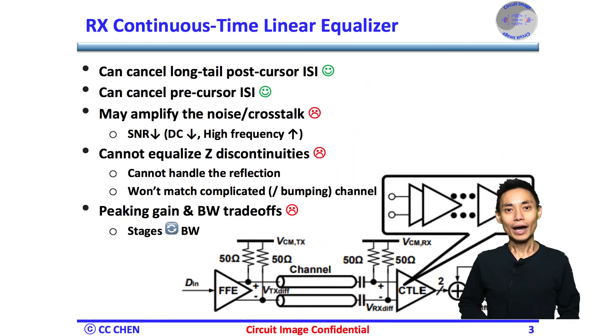Before any interesting images, let's understand the continuous-time linear equalizer CTLE further. The CTLE can cancel not only the precursor ISI, but also the long tail post-cursor ISI. And those are strengths of the CTLE as we've known in the why CTLE video.